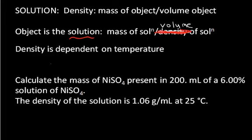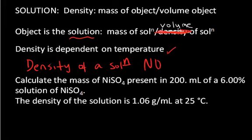The density of a solution is the mass of the solution divided by the volume of the solution. Density is dependent on temperature, so whenever we're given a density we're always given the density at a particular temperature. It's important to remember that the density of a solution is not the same thing as the mass percent concentration of a solution. Mass percent is a relationship between the solute and the solution, whereas the density is just describing the solution — the mass of the solution per the volume the solution takes up.